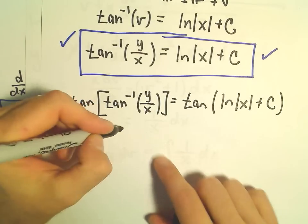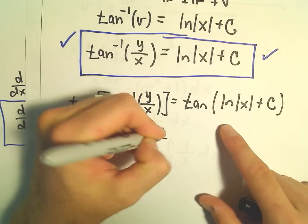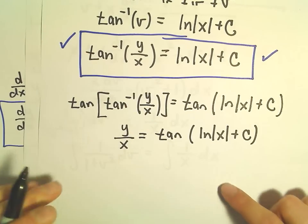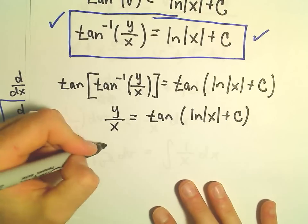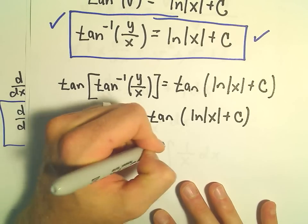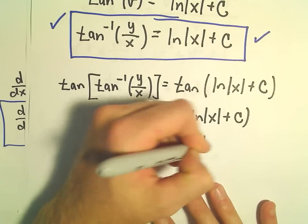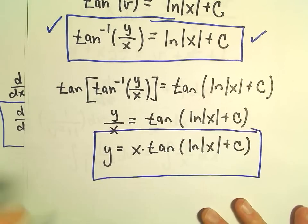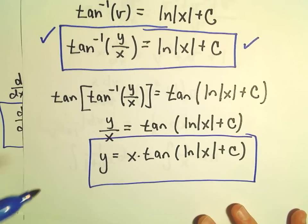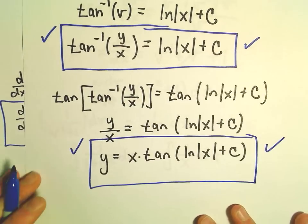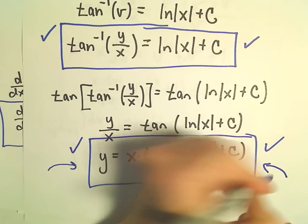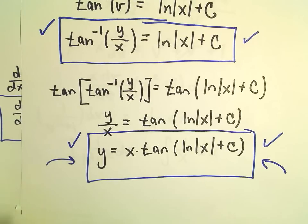On the left side we're just left with y/x equals tangent of (ln|x| + C). Now we can multiply both sides by x to get y = x · tan(ln|x| + C). This way is a bit preferable since y is isolated. Both forms are equivalent, but since it wasn't too difficult to solve for y, that's what I would do.